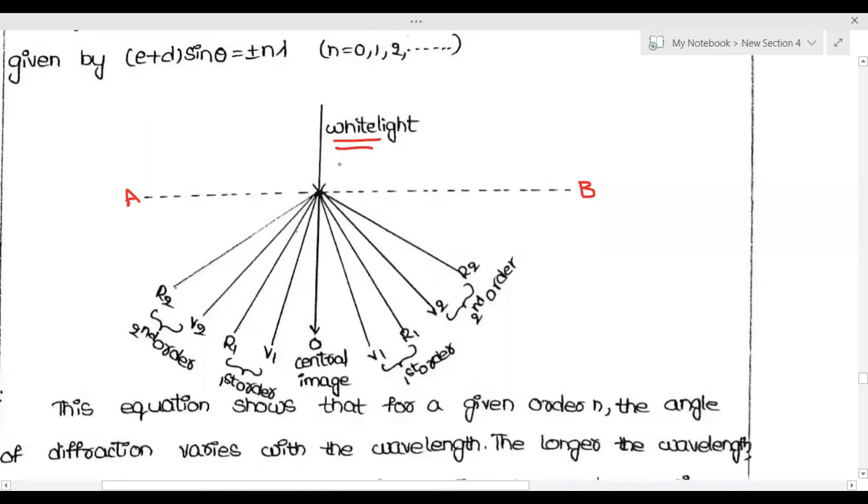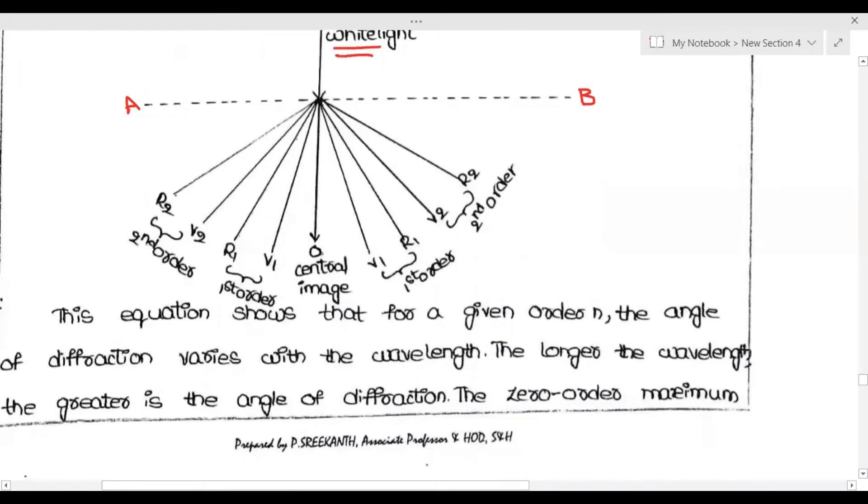White light will form a central image at midpoint. The central image at midpoint is similar to the incident light. White light forms a central image, so the central image is the same as the incident light.